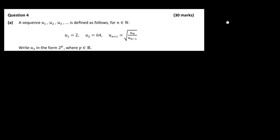Write u3 in the form 2 to the power of p, where p is a real number. We need to use our formula: u_(n+1) = √(u_n / u_(n-1)). We want u3, so n+1 = 3, meaning n = 2. So u2 is 64, which we were given in the question.